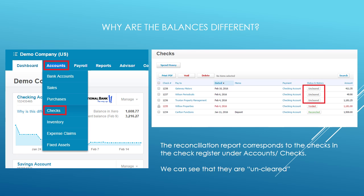You can drill in even further to make sure that those checks are accounted for. Go into Accounts and click on Checks in the dropdown. When you get there, you can see right there that there are three checks that are uncleared — checks that are out in the world that are uncleared. That's exactly where that balance mismatch comes in.